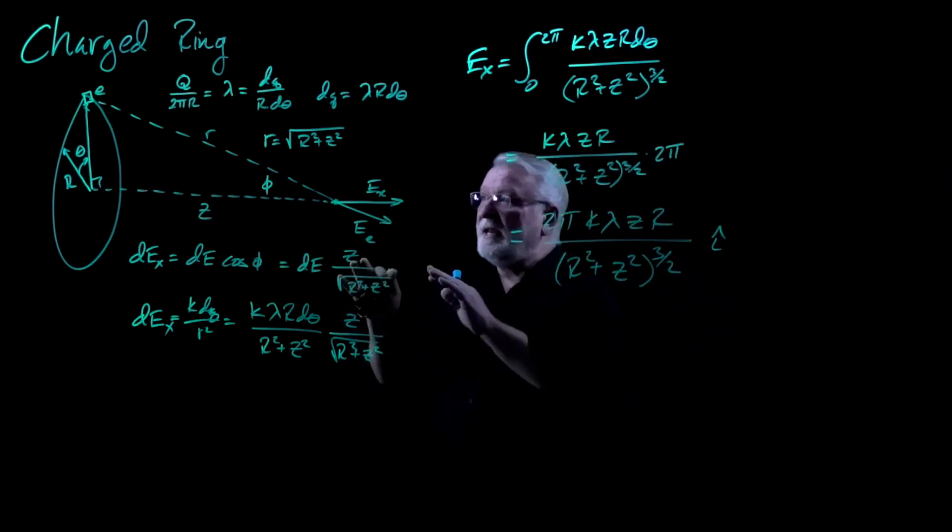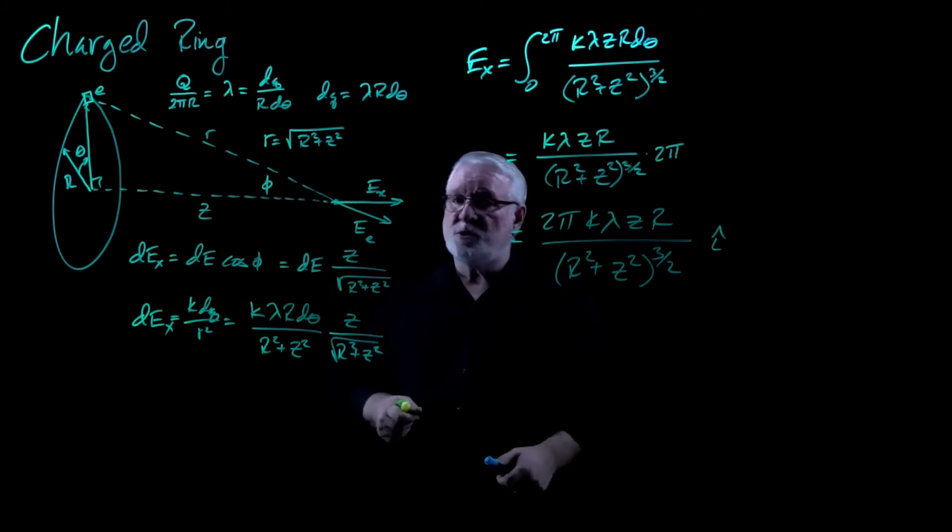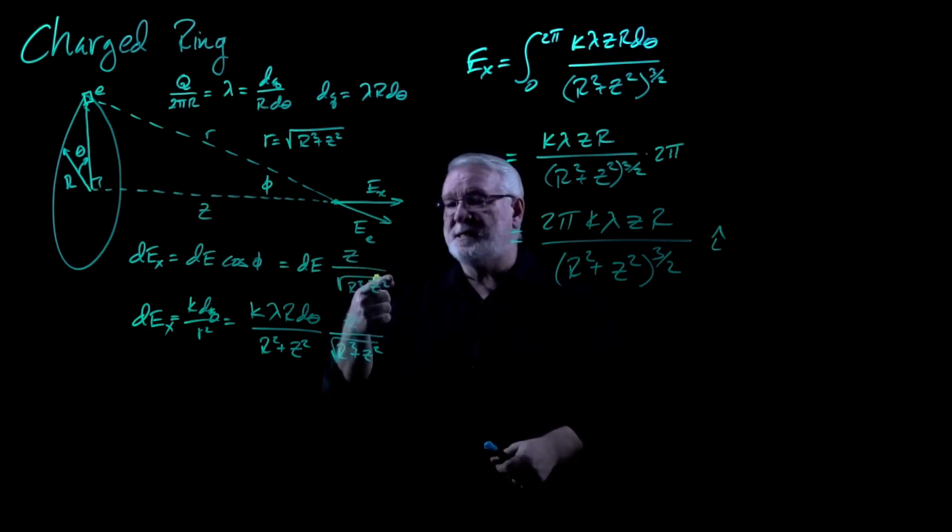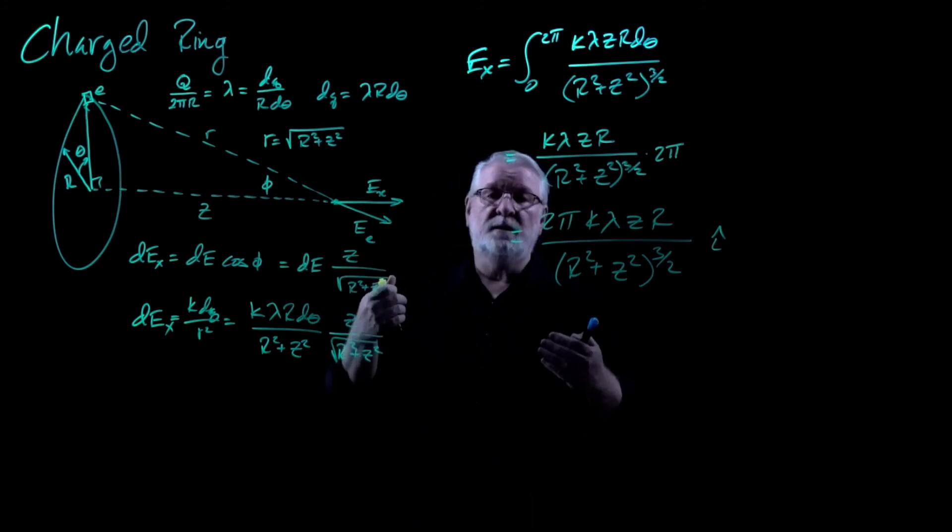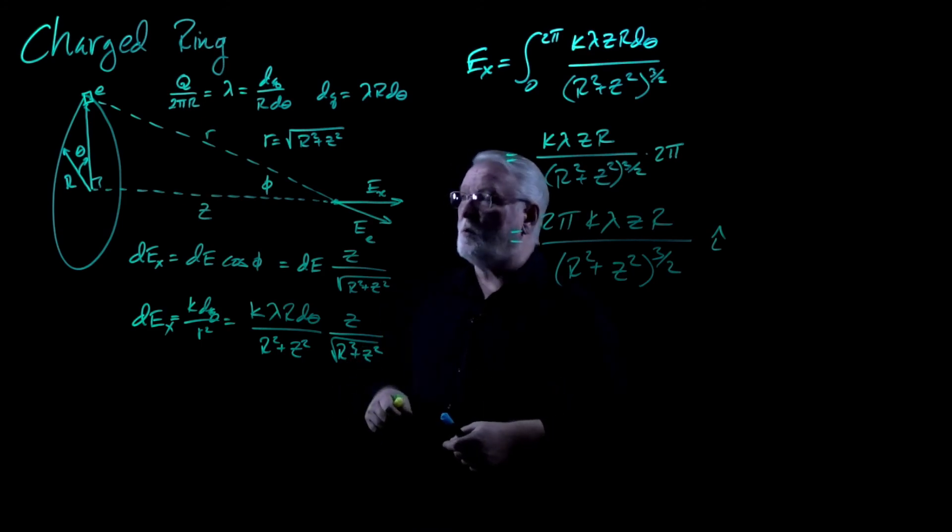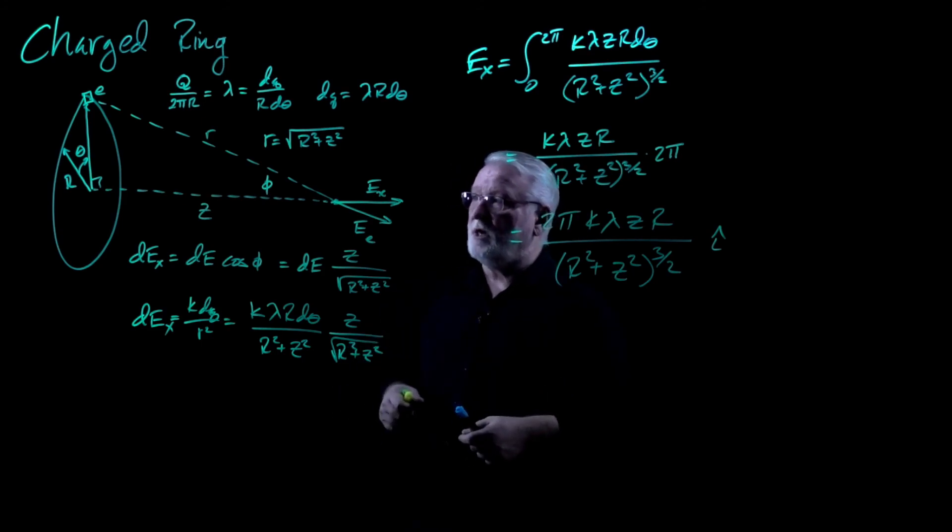So once again, we see that even a complex charge distribution, like a ring along its axis, and if you get far enough away from it, it looks like a point charge. It's just going to be 1 over Z squared will be the function that generates it.